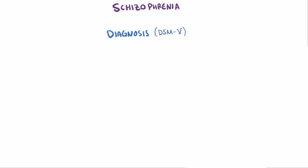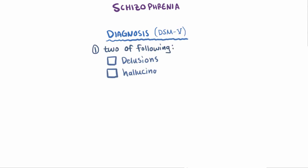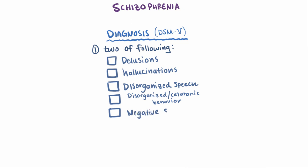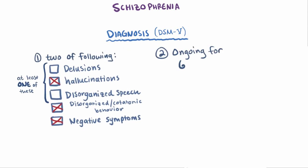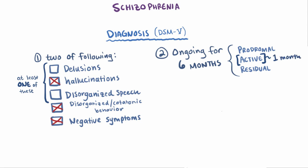For an official diagnosis of schizophrenia, patients need to be diagnosed with two of the following symptoms: delusions, hallucinations, disorganized speech, disorganized or catatonic behavior, or negative symptoms. At least one of them has to be either delusions, hallucinations, or disorganized speech — so they couldn't have just disorganized behavior and negative symptoms. Even though some patients have cognitive symptoms as well, they aren't specifically needed for a diagnosis. Signs of these disturbances must be ongoing for at least six months, with at least one month of active phase symptoms, and those symptoms can't be attributable to another condition like substance abuse.